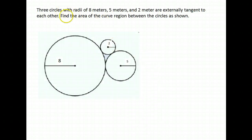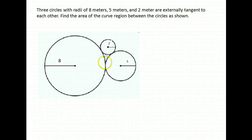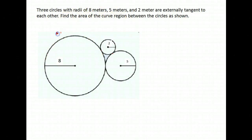Here's another question: three circles with radii of eight meters, five meters, and two meters are externally tangent to each other — that means they touch one another but don't overlap; they brush right along the edge. Find the area of the curved region between the circles, as shown. We want the area of this section right here.